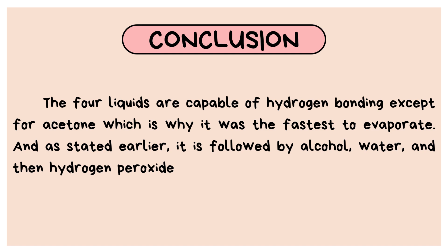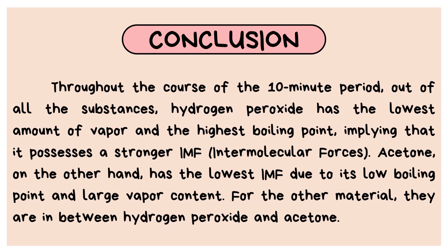As stated earlier, the evaporation order is followed by alcohol, then water, and then hydrogen peroxide. Throughout the 10-minute period, hydrogen peroxide produced the slowest amount of vapor and had the highest boiling point, implying that it possesses a stronger intermolecular force. Acetone, on the other hand, has the lowest intermolecular force due to its low boiling point and large vapor content.